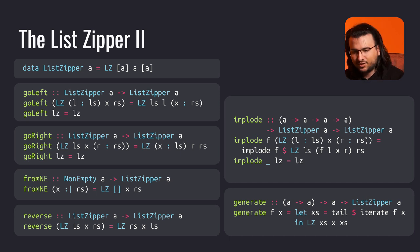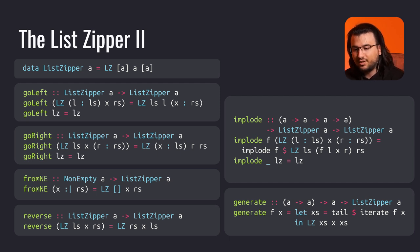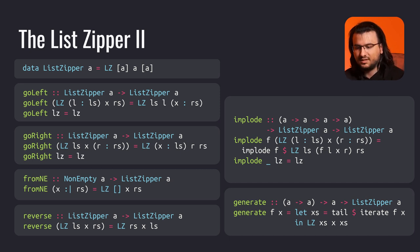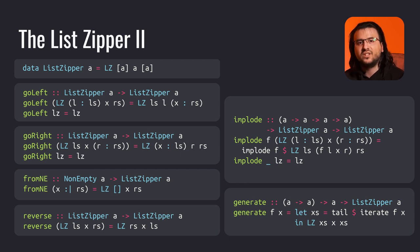Implode is a function that performs a sort of fold of our zipper. As long as there are elements neighboring the focused one, we take them out and put them into a ternary function along with the current focused element to get the new one, symmetrically reducing the length of the zipper. Notice that this function terminates if and only if one of the lists is finite. Generate is a function that generates an infinite zipper, given an initial value that takes on the role of the focused element. Be careful not to implode such generated zippers, otherwise you'll loop forever.